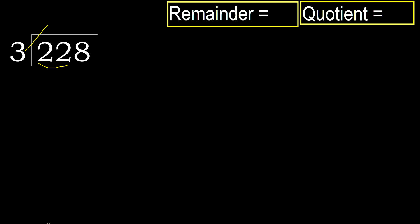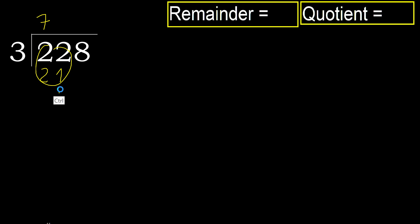3 multiplied by 8 is 24. 24 is greater. 3 multiplied by 7 is 21, which is not greater. Subtract: remainder is 1.